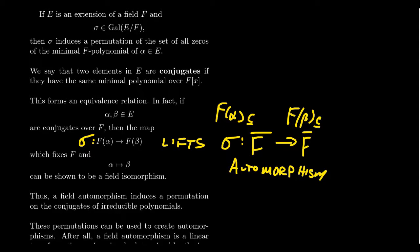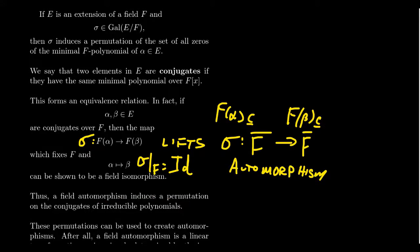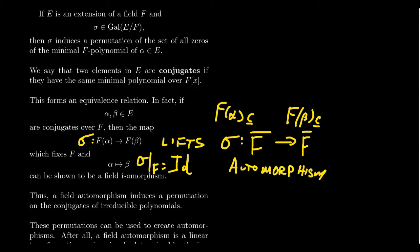As we said before, this field automorphism sigma is going to fix F — sigma restricted to F is just the identity. So sigma is an automorphism of the algebraic closure that fixes the base field F. Being an automorphism, it will permute the conjugates, and therefore a field automorphism induces a permutation on the conjugates of the same irreducible polynomial. That's where we get this equivalence relationship from.